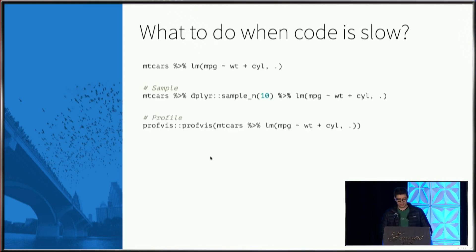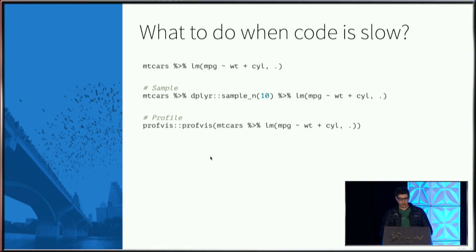Another technique when you have slow code is, in the same way that Joe Chang was presenting in the keynote this morning, you can use ProfVis. If something is slow, you can look at why it's slow. It might be your code or a package — you might have to use the package in a different way or switch to a different package. ProfVis is a great tool you should use when you hit this problem.